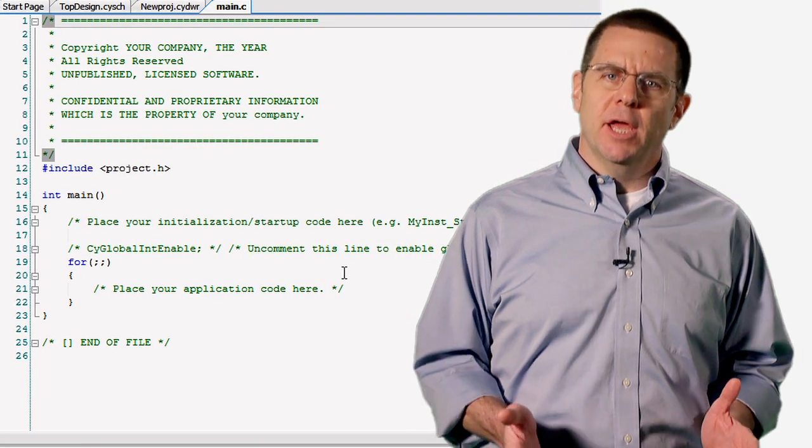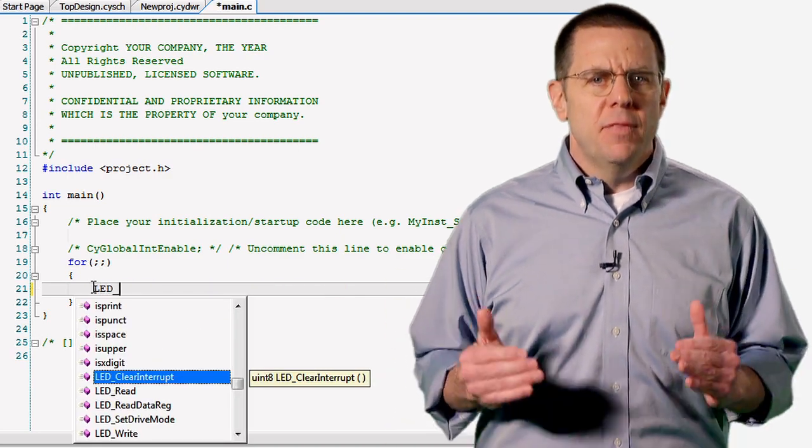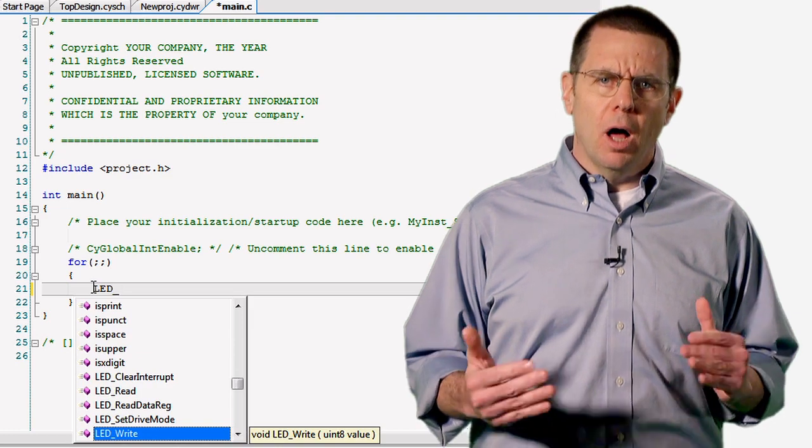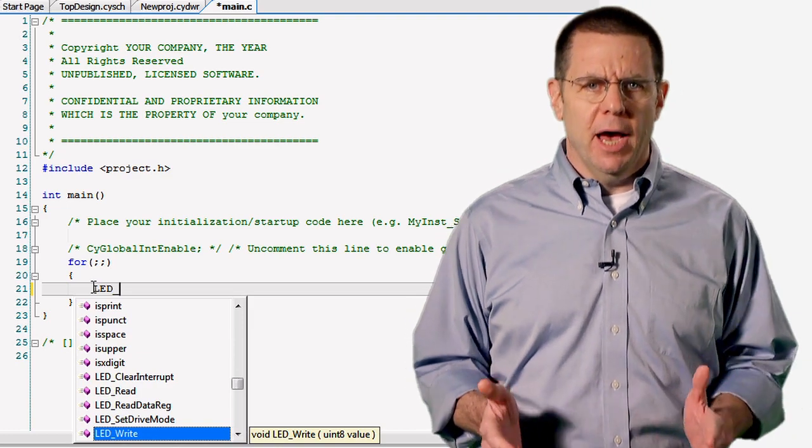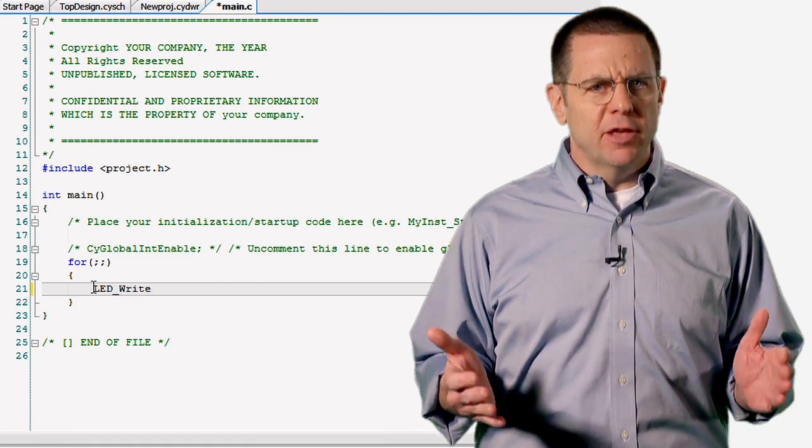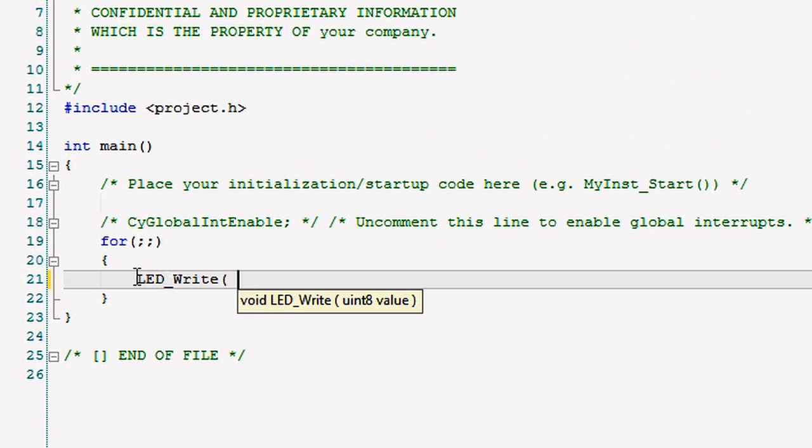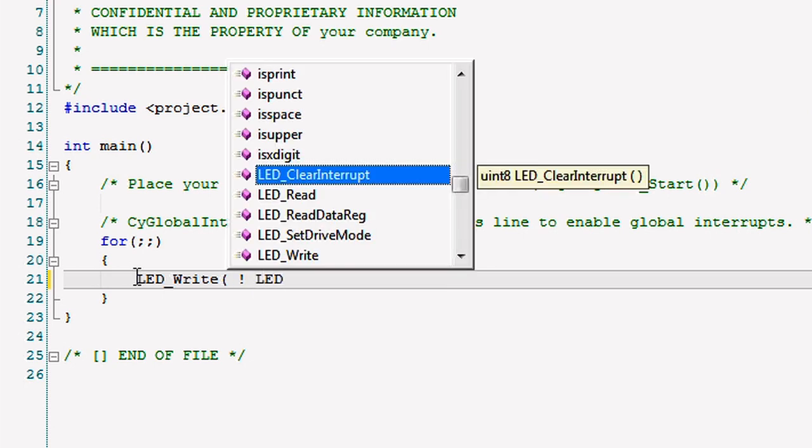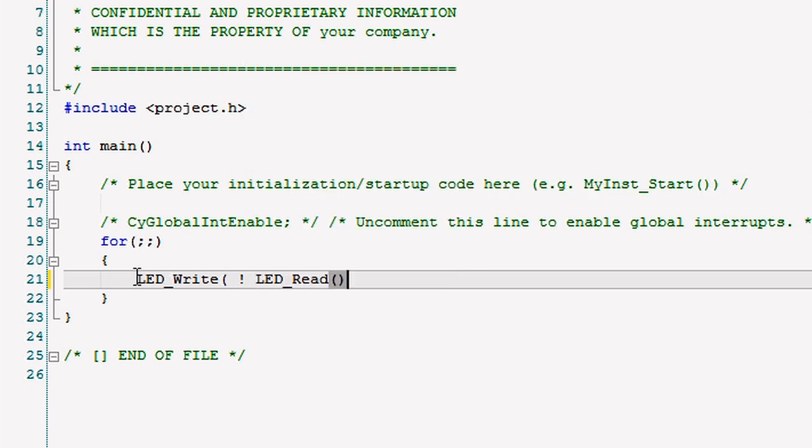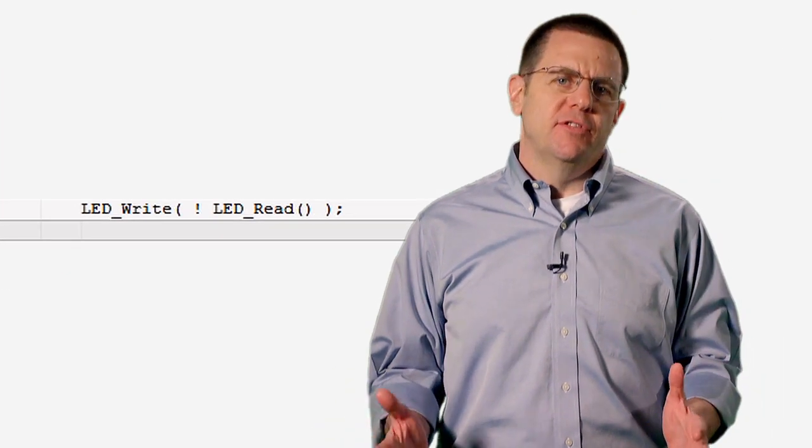Next, we will write our application firmware using the read and write functions for our pin. The name you gave the component will always be the first part of the API, so the creator-generated APIs in our case will start with LED underscore. We have LED underscore read as well as LED underscore write that we will use to make the LED blink.